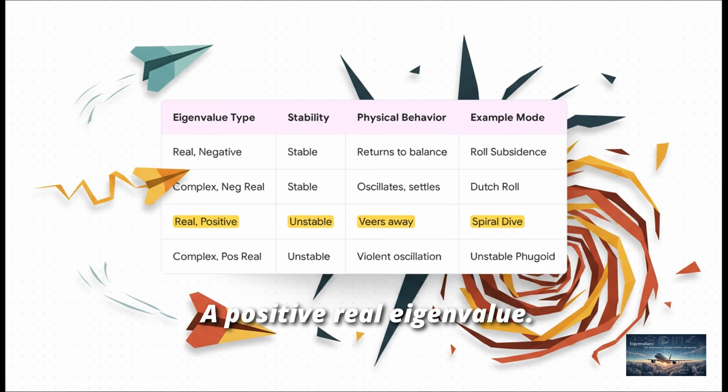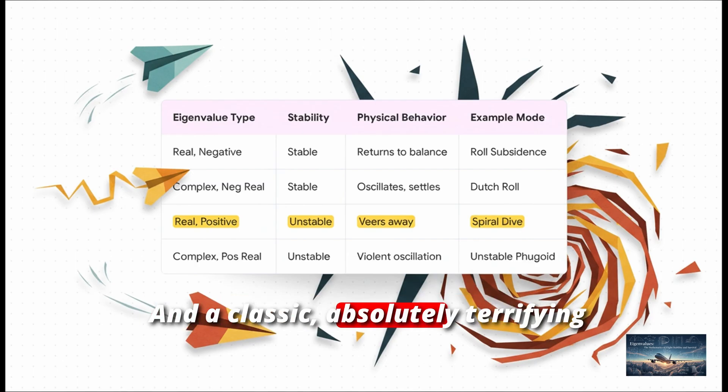So a negative real number means the plane just smoothly levels its wings. A complex number with a negative real part means it might wobble a bit, but it'll calm down. But look at that third row. A positive real eigenvalue. That means the plane will just drift further and further off course. And a classic, absolutely terrifying example of that is the spiral dive.